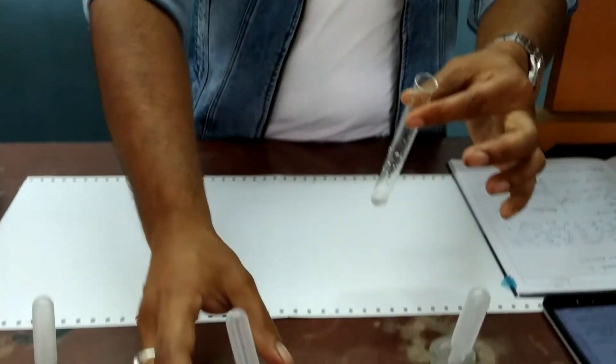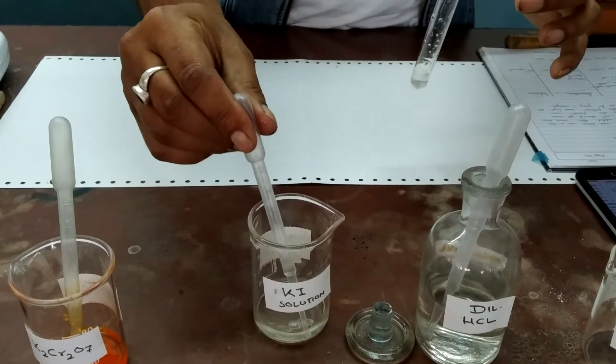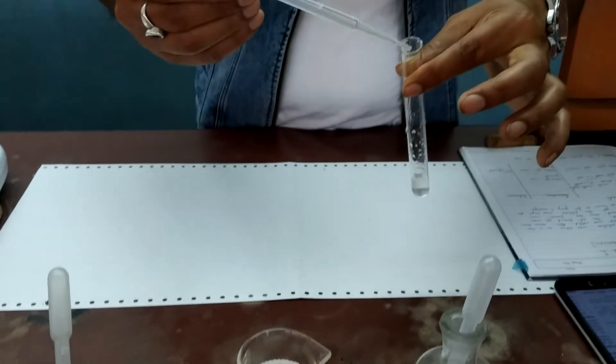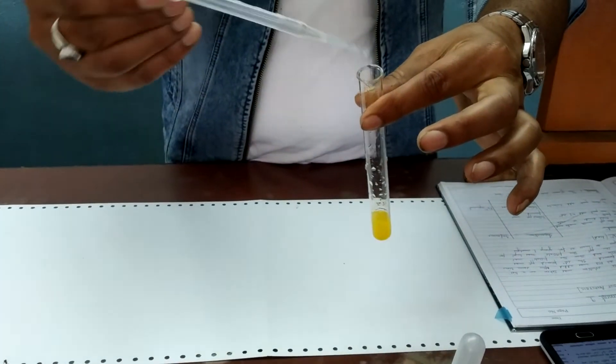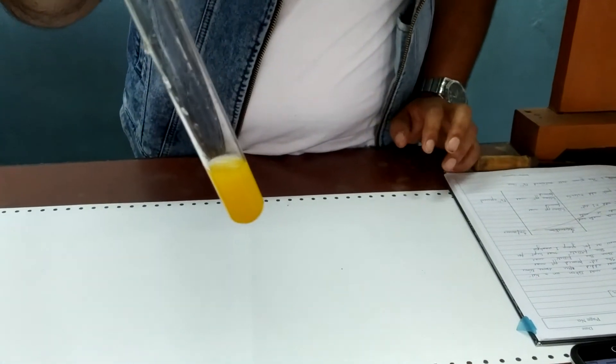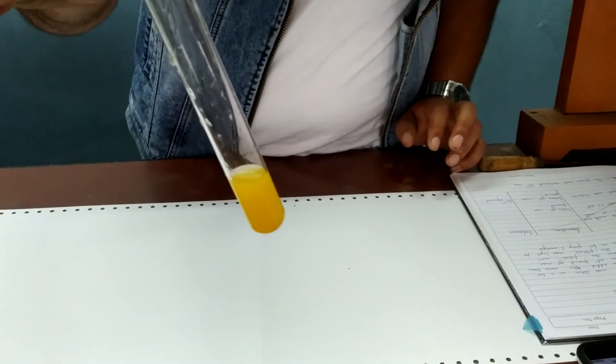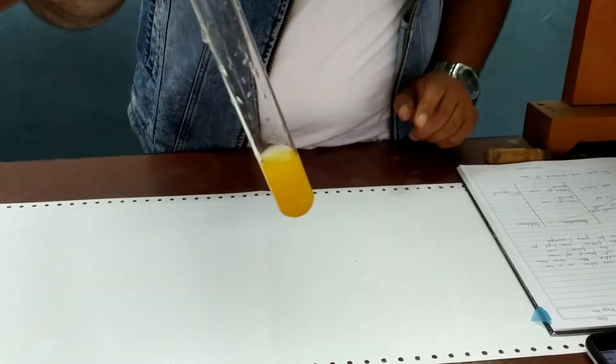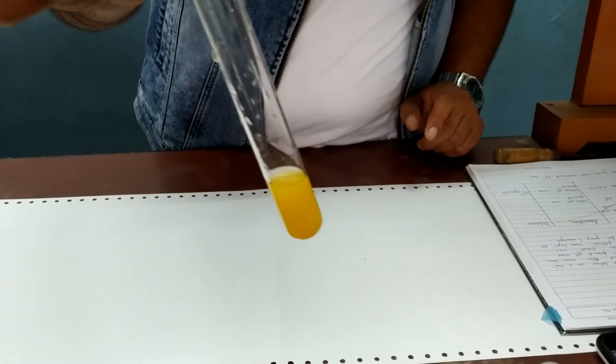In the first part we add potassium iodide solution. As you can see the yellow color PPT is formed. So this confirms the presence of lead in the given sample.